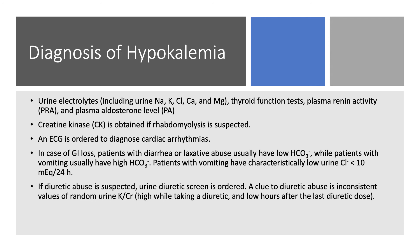Other tests sometimes needed include urine electrolytes if we suspect renal tubular acidosis or diarrhea. Sometimes we check plasma renin activity and plasma aldosterone if suspecting aldosteronism. If thinking about rhabdomyolysis, obtain creatine kinase. If the patient has arrhythmias, obtain an EKG. Patients with GI loss due to diarrhea or laxatives will have low serum bicarb due to non-anion gap metabolic acidosis. Patients with vomiting will be alkalotic with elevated serum bicarb. If you do urine electrolytes on someone with vomiting, urine chloride will be low.